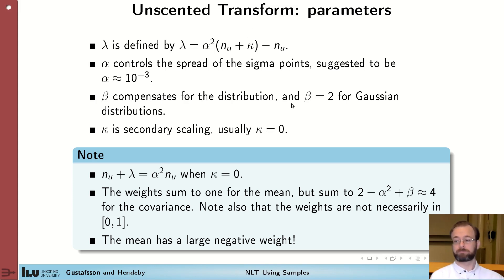Lambda is then a function of these parameters. It can be noted that when kappa is equal to zero, nu plus lambda becomes alpha squared times nu. That is, this is exactly the scaling we use to move the sigma points out of the mean of the distribution. It should also be noted that the weight sums up to 1 for the weights used for the mean, whereas it adds up to slightly more for the weights used for the covariance computations. This is to make sure that the covariance turns out to be positive. It should also be noted that the weights are not probabilities in the sense that they can have values outside of the region 0 to 1 and often do for the center points.